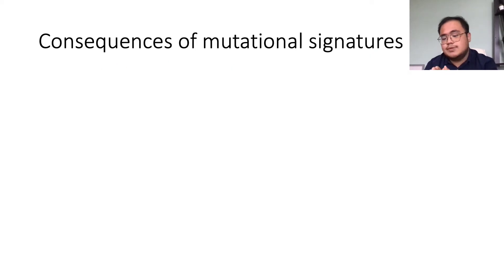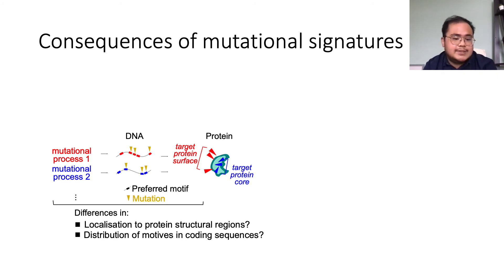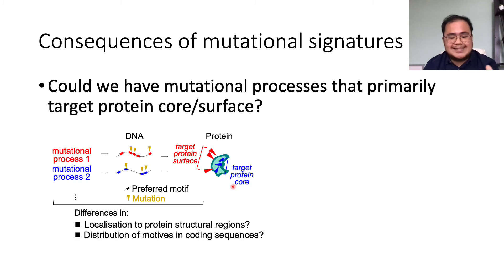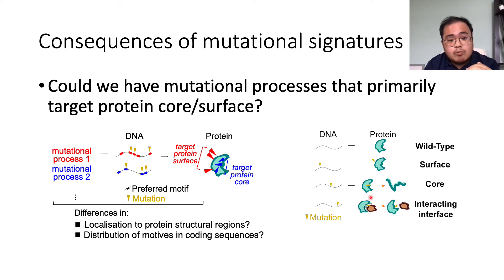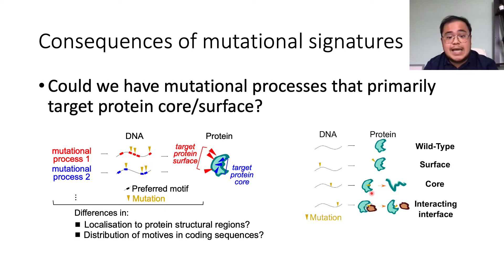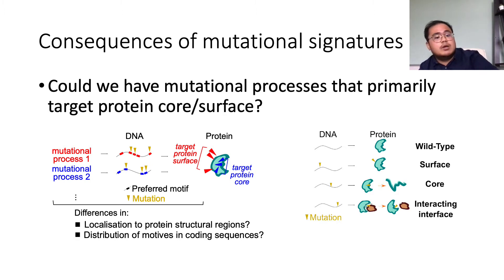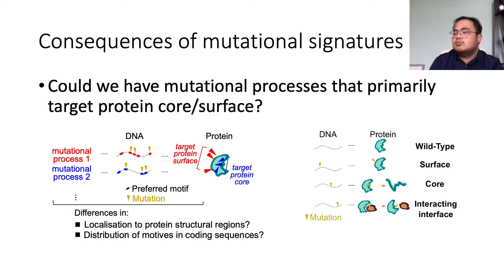This leads to the question: can we have mutational processes which target motifs preferentially on the surface or in the core of the protein? Linking observed DNA substitutions to protein structural features is important because where they are in the protein could inform us of possible consequences. For example, if a mutation is in the core and introduces a dramatic change, we can imagine the protein being destabilized and misfolded. Whereas if it's on the surface targeting a site of interaction, it is not compromising protein stability as much but is instead specifically rewiring a particular segment of the molecular interactome. Using structure, we can build interpretable explanations of the possible consequences of a mutation.